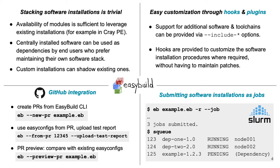Finally, EasyBuild can also submit installations as jobs to a resource manager like Slurm. This makes it particularly easy to install a large software stack on a new system, by leveraging the available resources through the job queue.